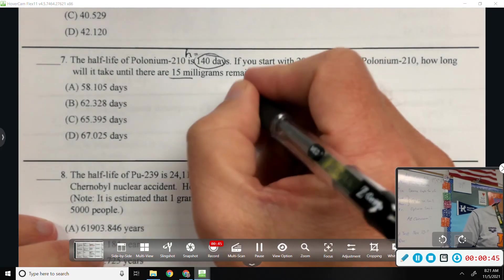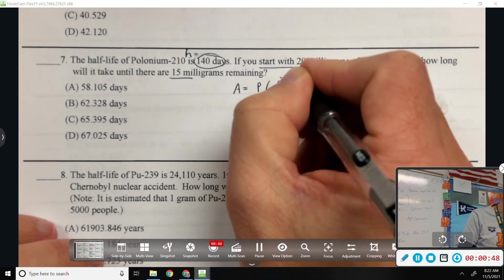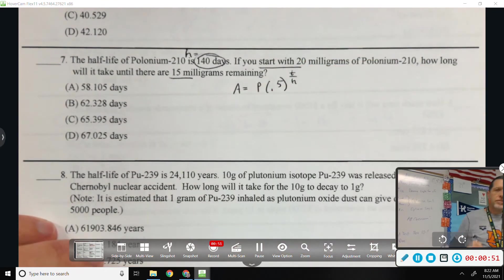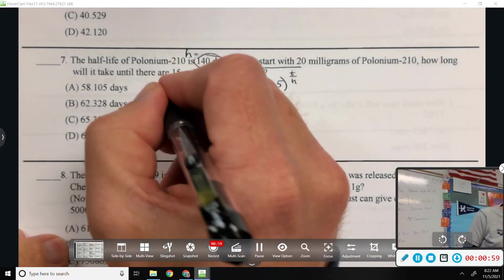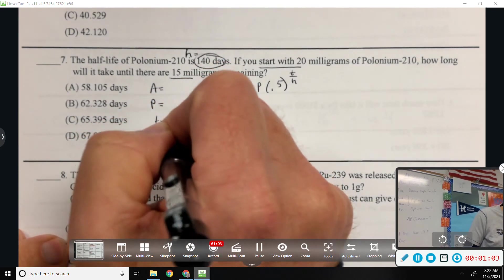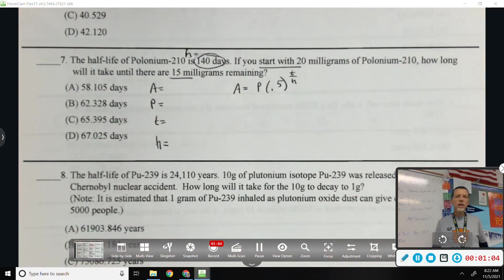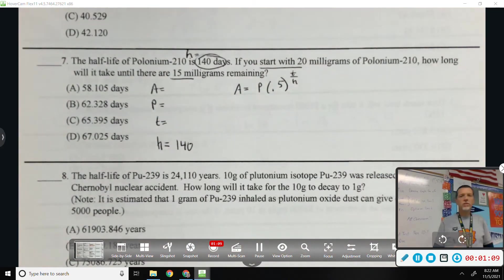Well, the half-life formula is probably the easiest one to recognize because it has a half in the formula. No excuse for picking the wrong formula when it's a half-life problem. So I need to figure out A, P, T, and H. We already said H was 140. That's how long it takes to decay by half.